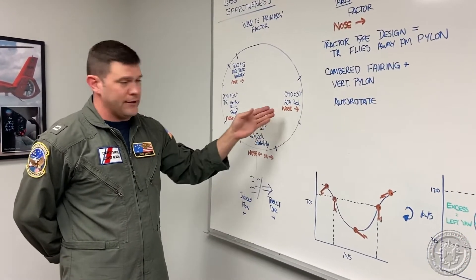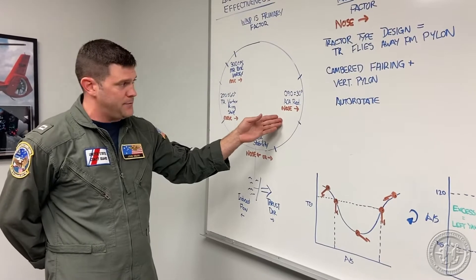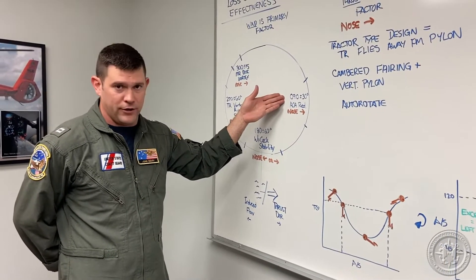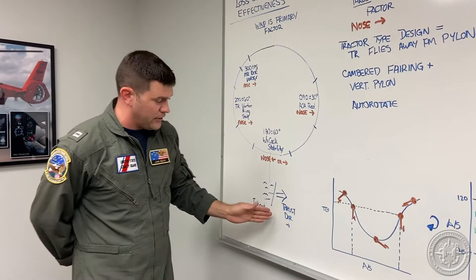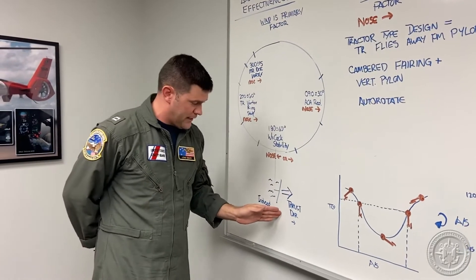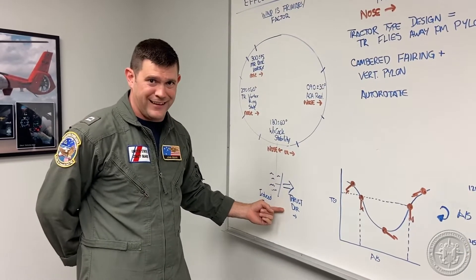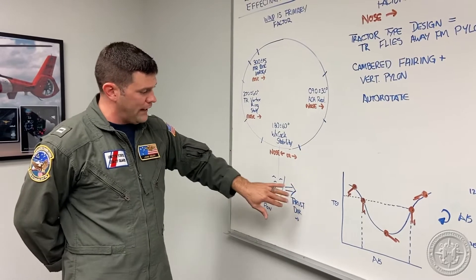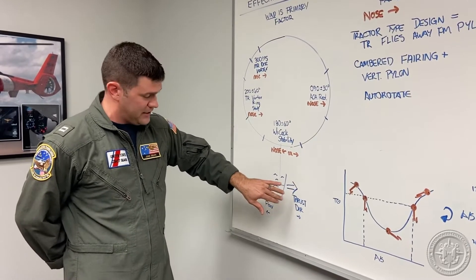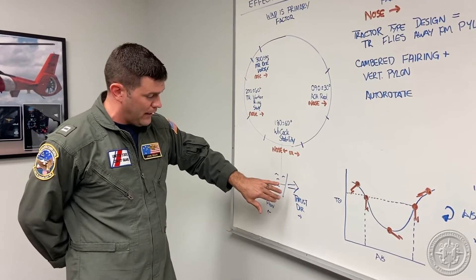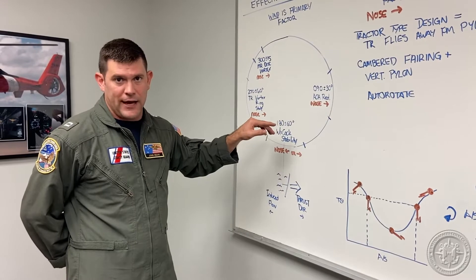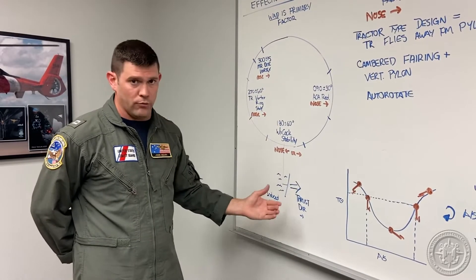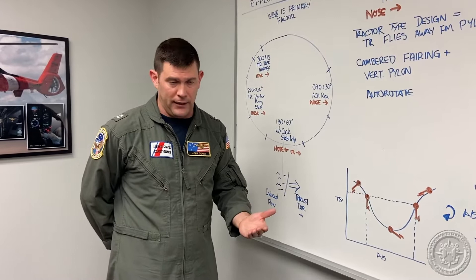When wind is entering the rotor system at that aspect — approximately 090 plus or minus 30 degrees — because of the tail rotor design, the H60 helicopter has a thrust direction to the starboard or to the right. When wind comes from that direction and hits the tail rotor, it reduces the angle of attack of the tail rotor blades. The result is that the nose will go right, absent action from the pilot.